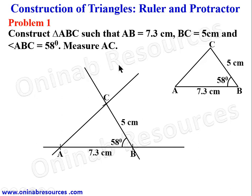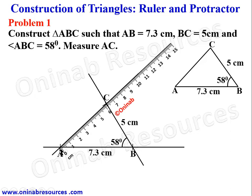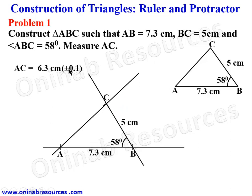Now we are to measure AC. We place our ruler with the zero point at A and read at C. This is approximately 6.3, 6.4, 6.5 — so AC is 6.3 centimeters. We have an error margin of plus or minus 0.1 — if you have 6.4 you are still in order, if you have 6.2 it is still correct, but 6.5 or 6.1 will not be acceptable. That is the end of the solution to problem one.